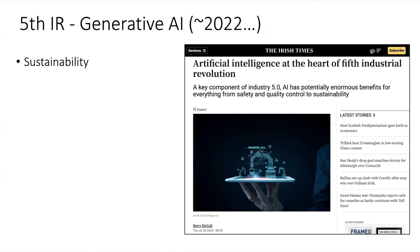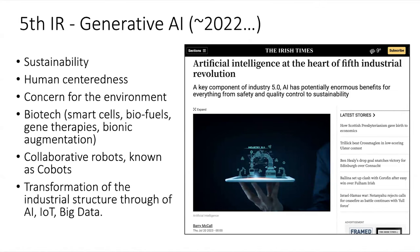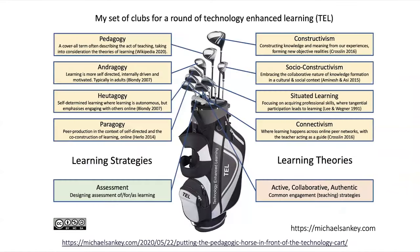The Fifth Industrial Revolution is also about biotech, smart cells, biofuels, gene therapies, collaborative robots known as co-bots, transformation of industrial structures through AI, the Internet of Things, and big data. So we come back to this metaphor of the tectonic plates.